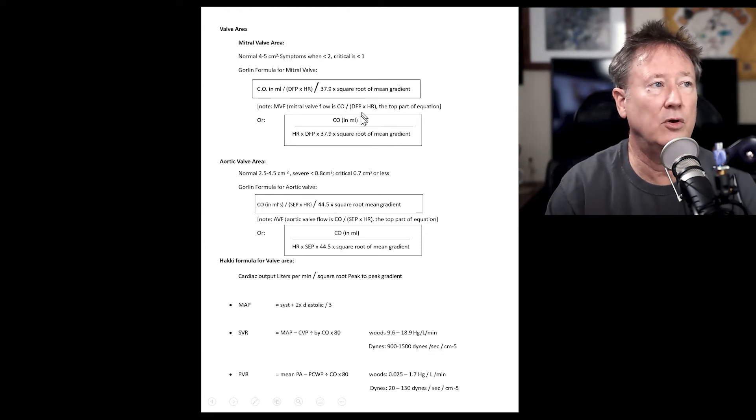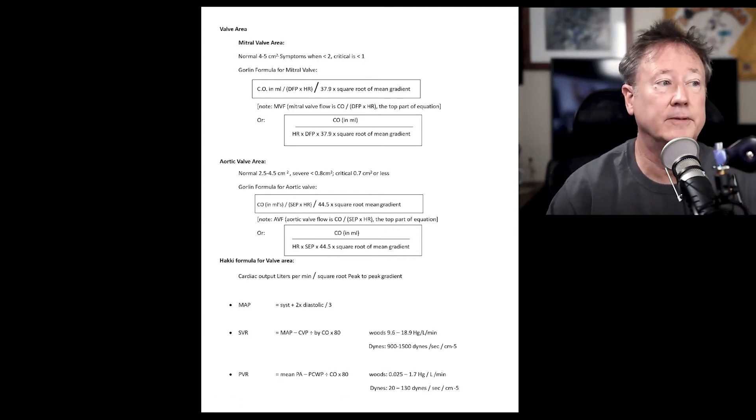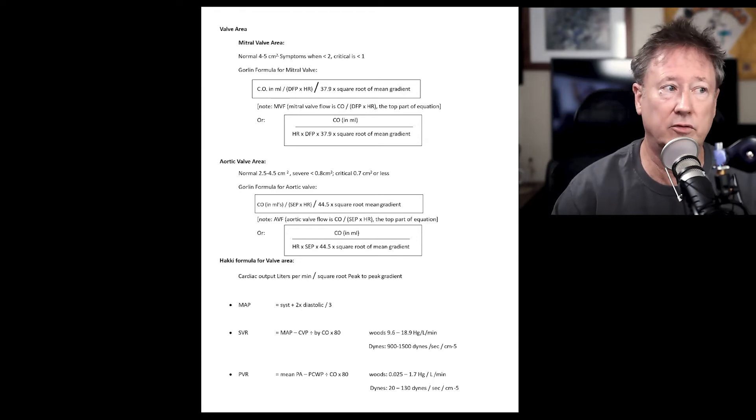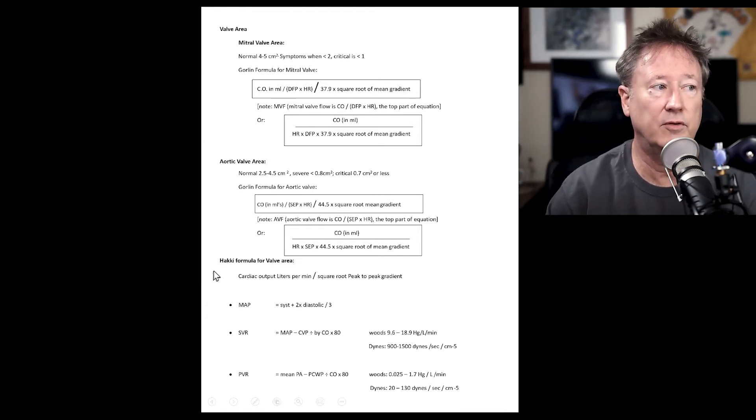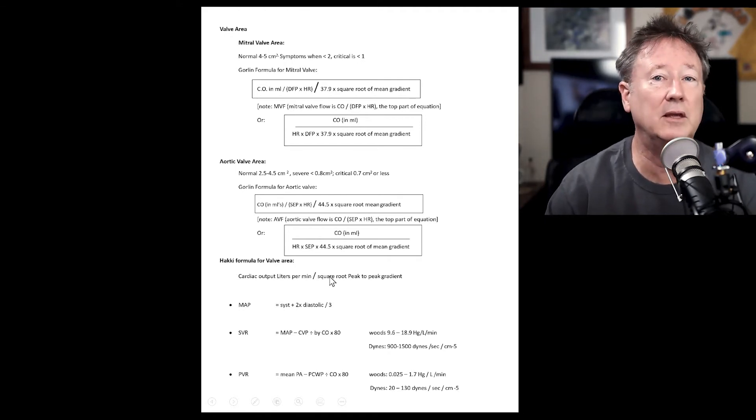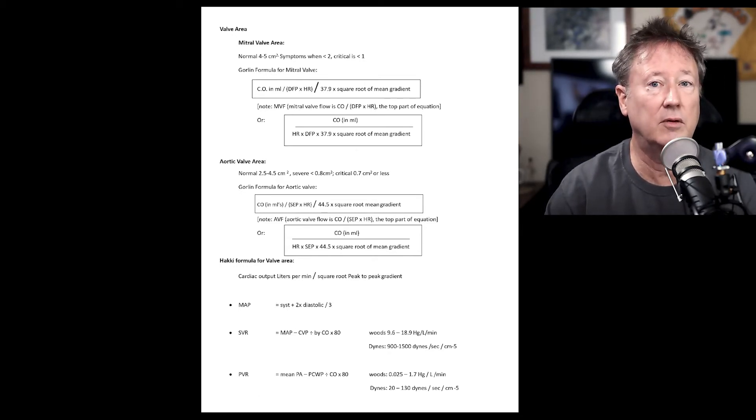And then for valve area, here's mitral valve area, whether you want to do flow or whether you want to do the way that I prefer cardiac output divided by everything or what we just went over. And then the Gorlin formula for aortic valve, again, flow divided by some of the constants or cardiac output divided by all the variables. And then the Hakki or Hakkai formula for the shortcut for calculating valve area, where it uses cardiac output in liters. So the difference here is that in Hakki, it's the cardiac output in liters, and you're divided by the square root of the peak to peak. Whereas in the other formulas, you're using cardiac output in milliliters and you're using the square root of the mean gradient.